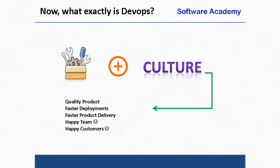Using DevOps leads to multiple benefits. It helps deliver a quality product, deploying code faster across multiple environments such as UAT, staging, and production, leading to faster product delivery and happy customers. Since we are making a change in the culture, it also leads to happy teams, which increases their productivity.